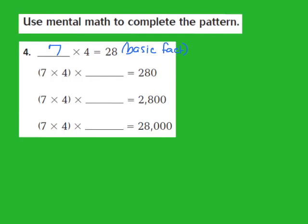Next, I look at the next part in the pattern. They give me 7 times 4 times blank equals 280 — so I don't know the power of 10. When I look at my product, I see that behind my 28 there is 1 zero. If I know there's 1 zero behind the 28, I know I should write down the first power of 10, because my exponent should match the number of zeros in my product. So my missing number is the first power of 10.